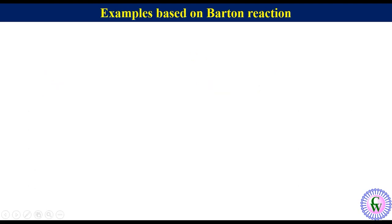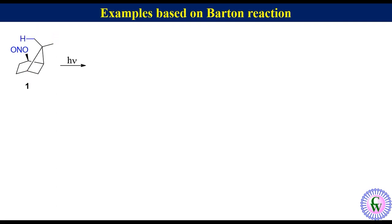Now we will discuss examples based on Barton reaction. Let's first have compound 1 as a starting material. If we look at the structure, there are three delta carbons with hydrogen. One thing to note is that in Barton reaction, out of several available delta hydrogens, only those which are close in space to the nitrite group get abstracted. So in compound 1, the delta hydrogen which is closer in space to the nitrite will get abstracted, and we will get this oxime as the product.